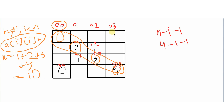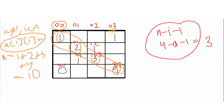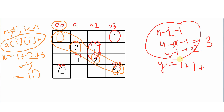For the second diagonal, we use the formula a[i][n-i-1]. When i equals 0, we get index [0,3] and add that value into variable y. When i equals 1, we get index [1,2], and continuing we get [2,1] and [3,0]. Adding those up gives y equals 3. Combining x and y gives a final sum of 13.